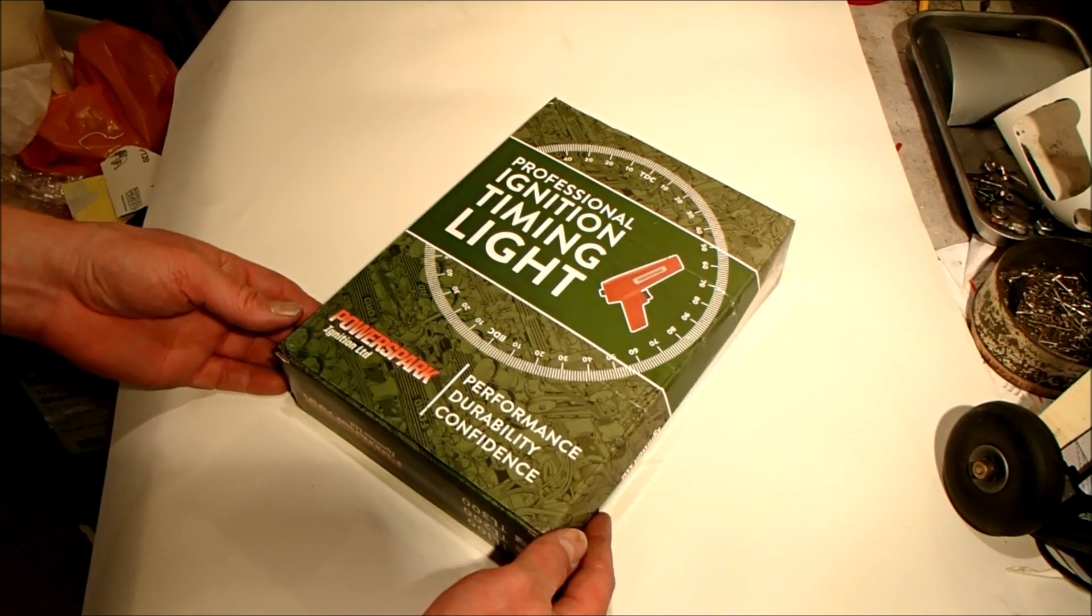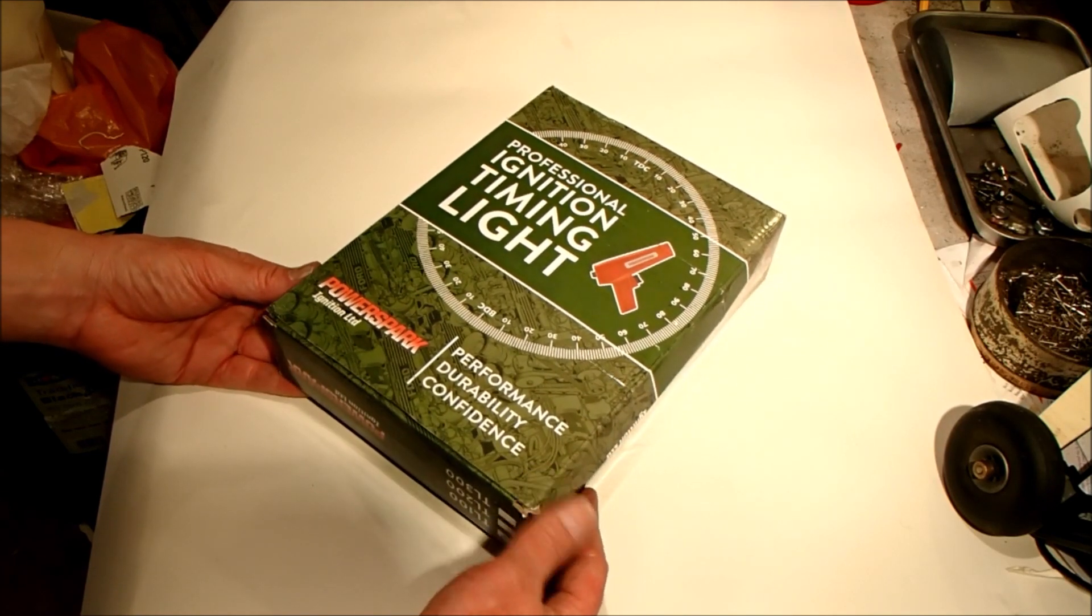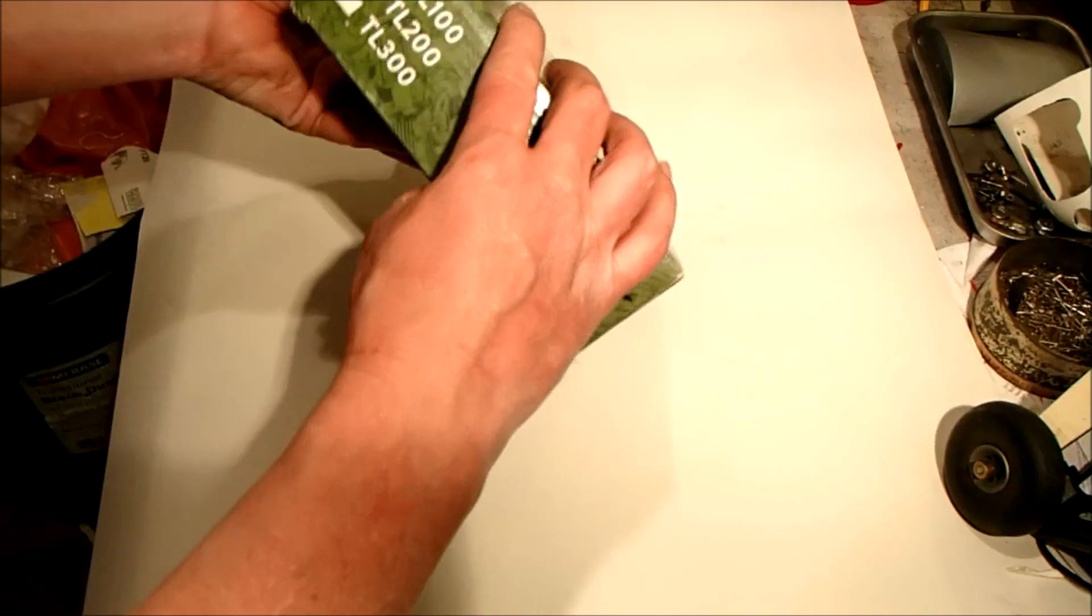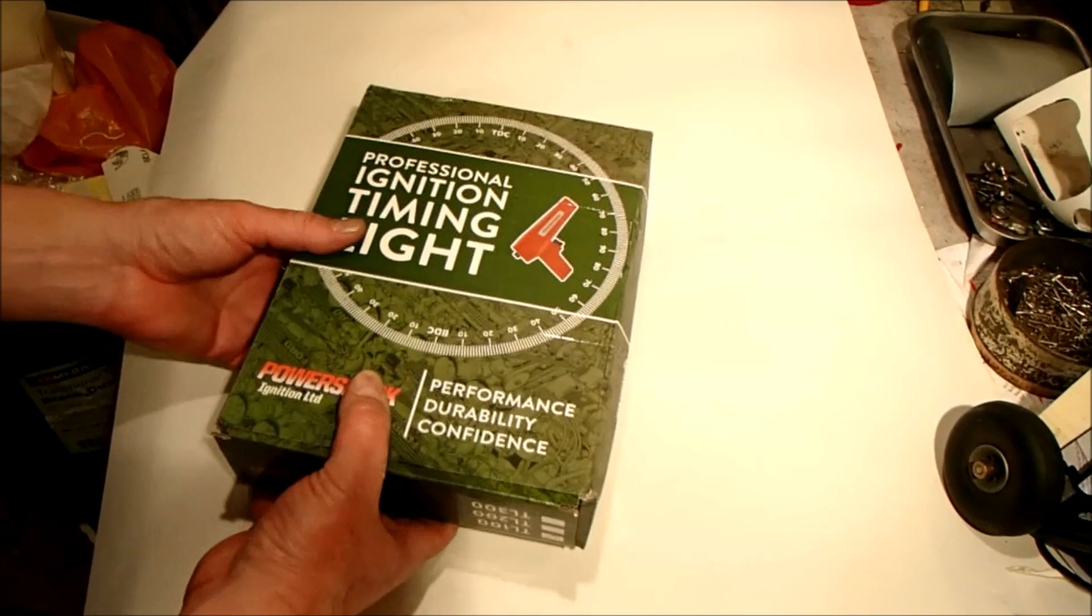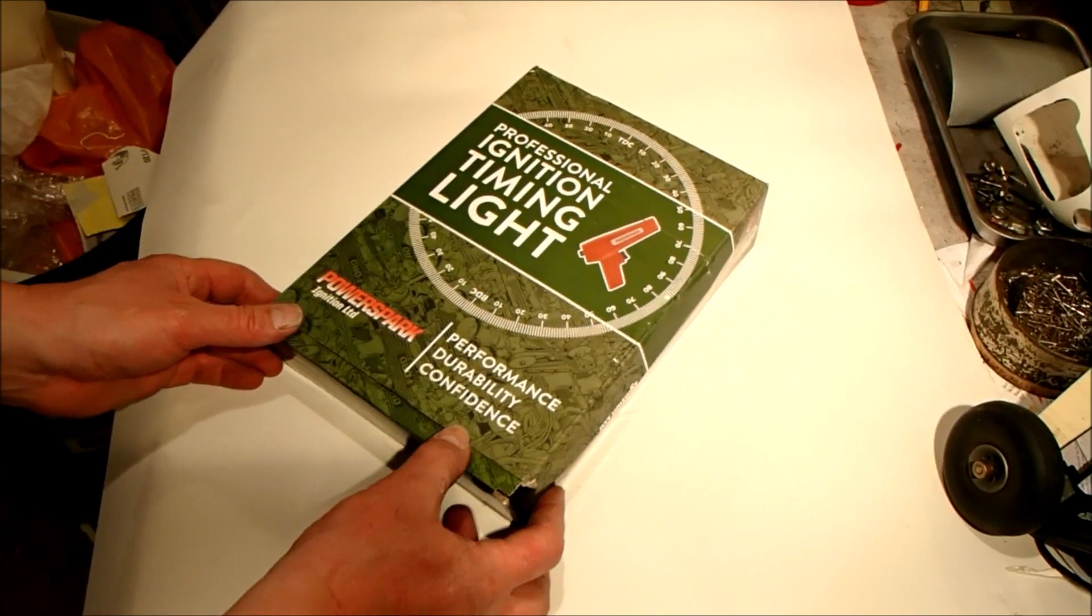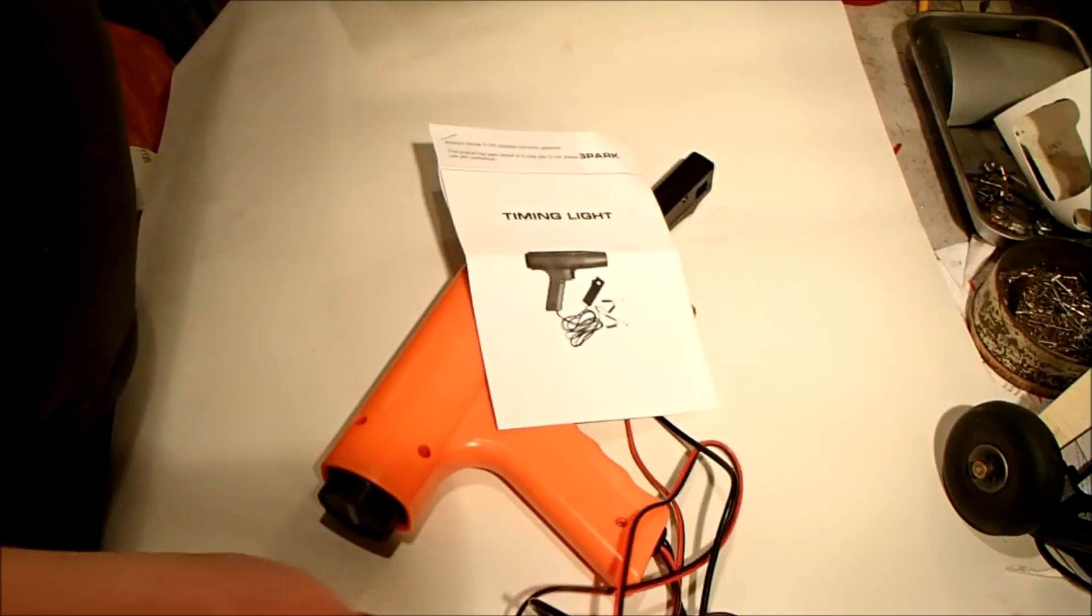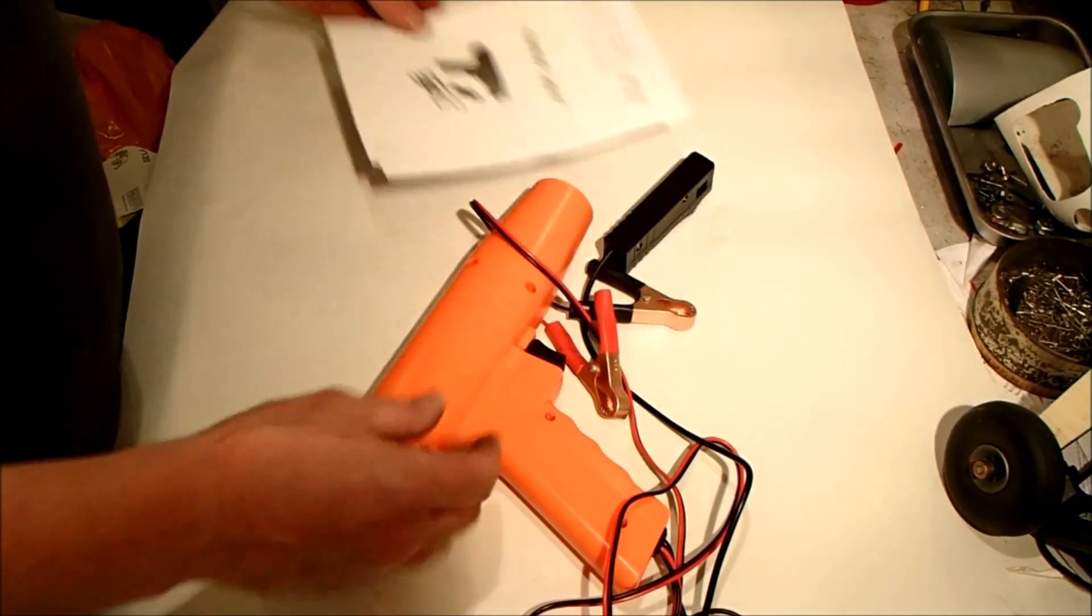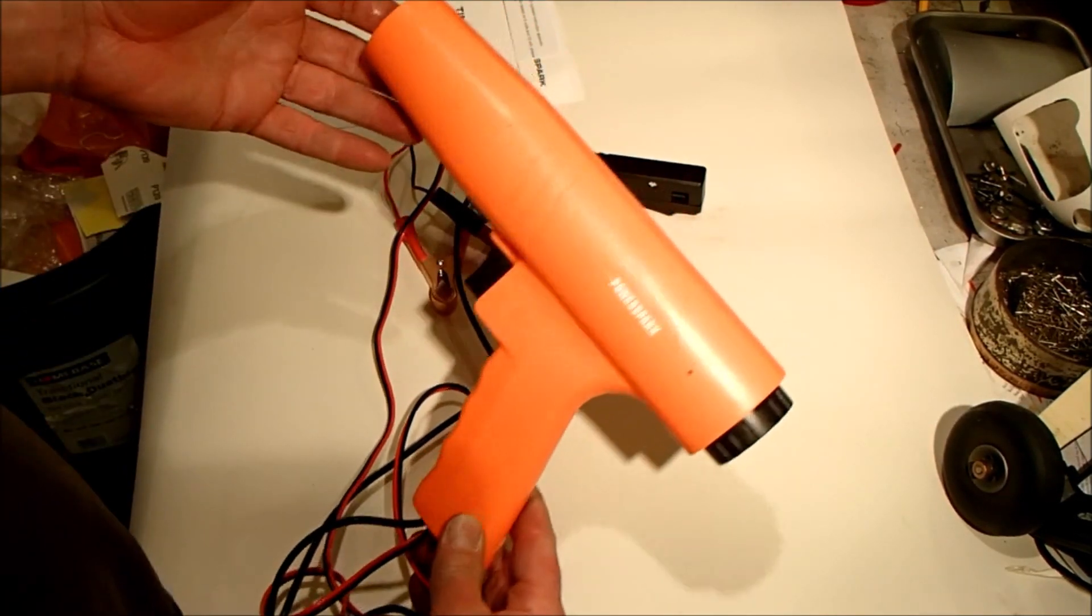This is the TL100 model. It was 18 pounds off eBay and arrived within a couple of days of purchase. In the box we have an instruction leaflet and we have the gun itself, which is bright orange and probably doesn't show up very well in this light.